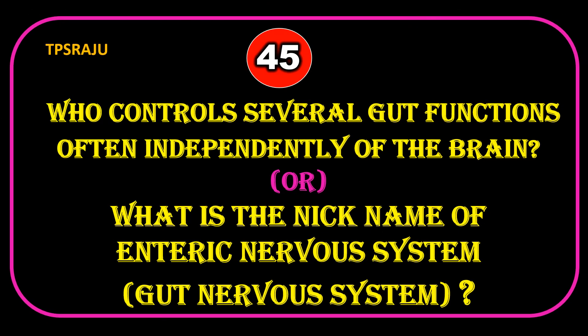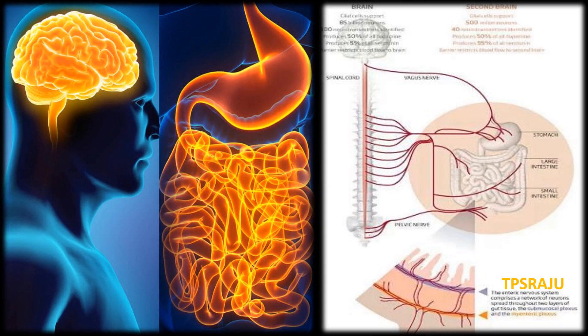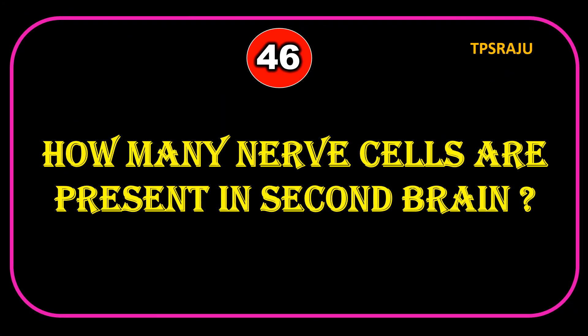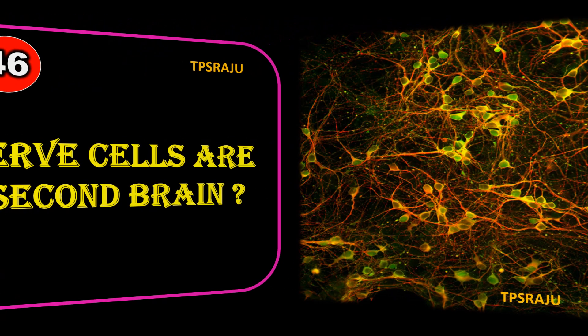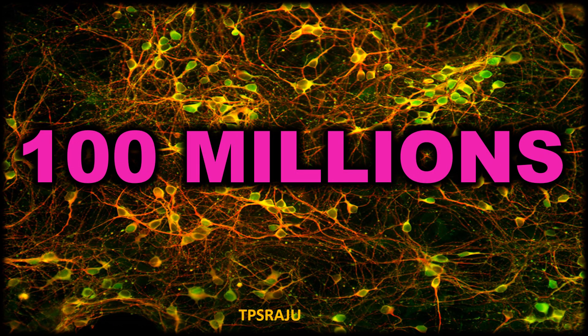What controls several gut functions often independently of the brain? The enteric nervous system, nicknamed the 'second brain.' It contains about 100 million nerve cells.